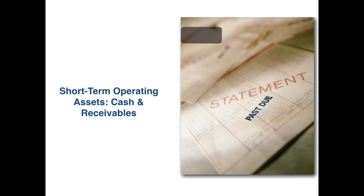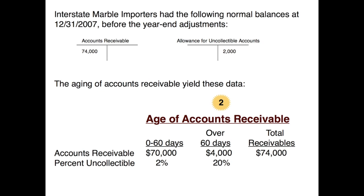Let's jump right in with an example. Here we have Interstate Marble, an importer. They had the following normal balances at the end of the year, December 31st, before year-end adjustments: accounts receivable of $74,000 and an allowance account balance of $2,000. Remember the allowance account — whether it's called allowance for doubtful accounts, allowance for uncollectible accounts, or allowance for bad debt — is a contra asset account, so it carries a credit balance, contra to the normal debit balance of assets.